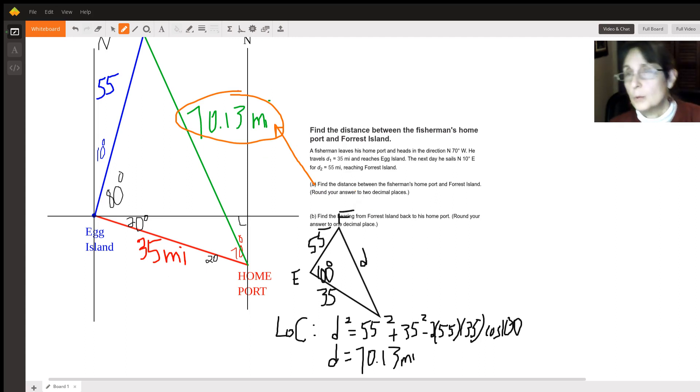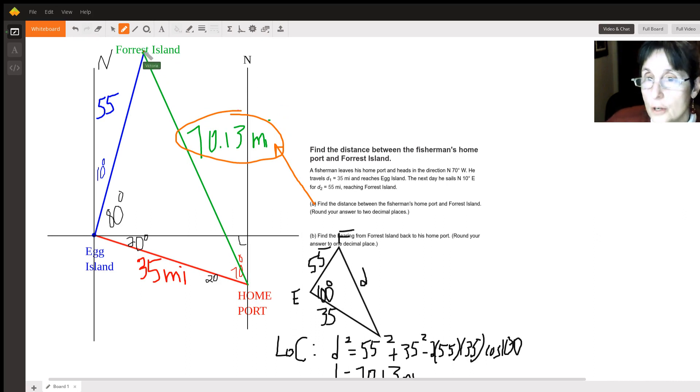Now the other thing they want is the bearing. So if you think about it, he is starting here and it matters that he is going this direction. You might think that this is the bearing angle, but this would be a north something west when in fact he is starting from south and going something east, which is how he lands here.